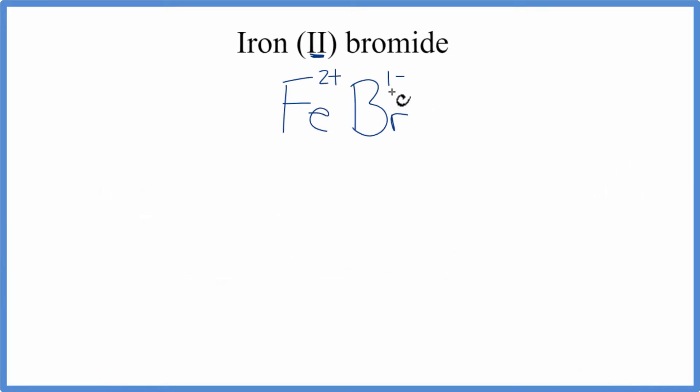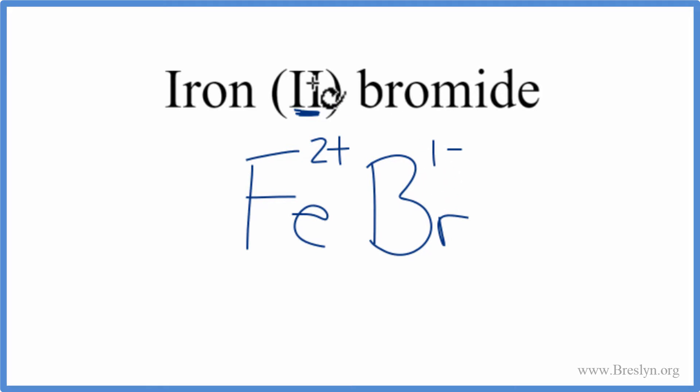So these numbers need to add up to 0 to have a neutral compound, and iron (II) bromide is a neutral compound. Right now they don't add up, but we can do a little trick here to figure that out. We can change these subscripts to get a net charge of 0 for the compound.